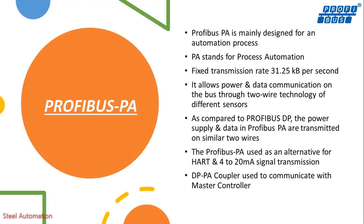Profibus PA is mainly designed for automation processes. PA stands for Process Automation. It operates at a fixed transmission rate of 31.25 kbps. It allows power and data communication on the bus through two-wire technology for different sensors. As compared to Profibus DP, the power supply and data in Profibus PA are transmitted on the same two wires. Profibus PA is used as an alternative to HART and 4 to 20 mA signal transmission.